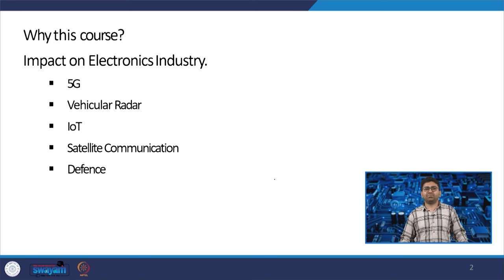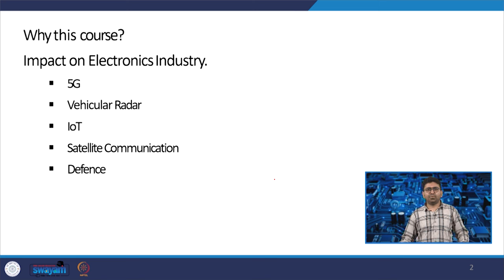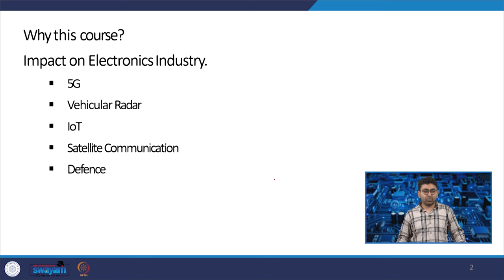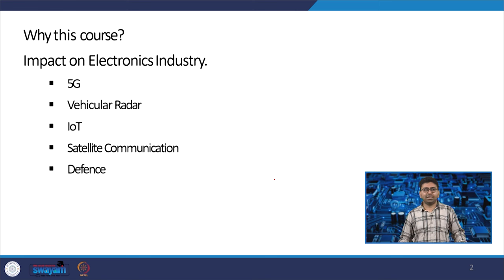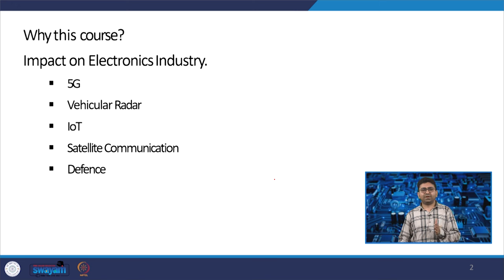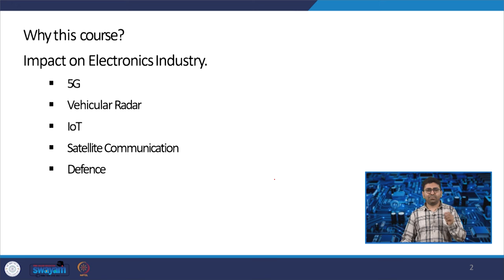We are right now using 5G. 5G has many applications and is going to cover all mobile communication and include many other communications in the electronics industries. This course has a direct relation to how we use 5G, and 5G's backbone is wireless communication. When we think about the 5th generation, 6th generation, and past generations, wireless plays an important role.